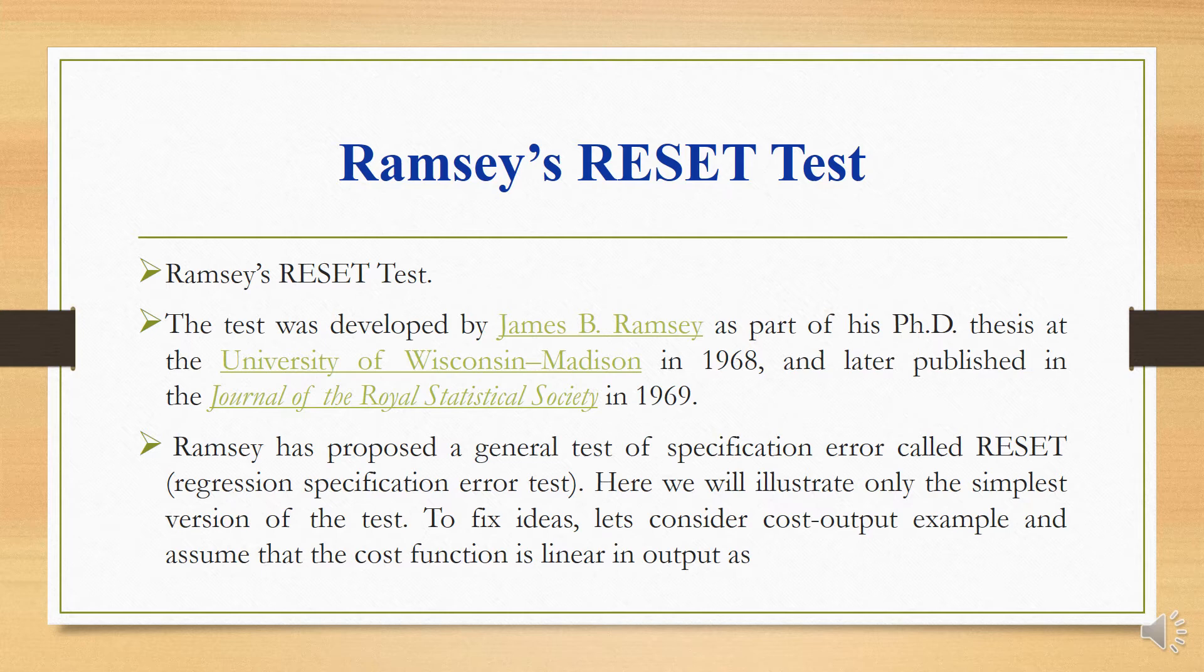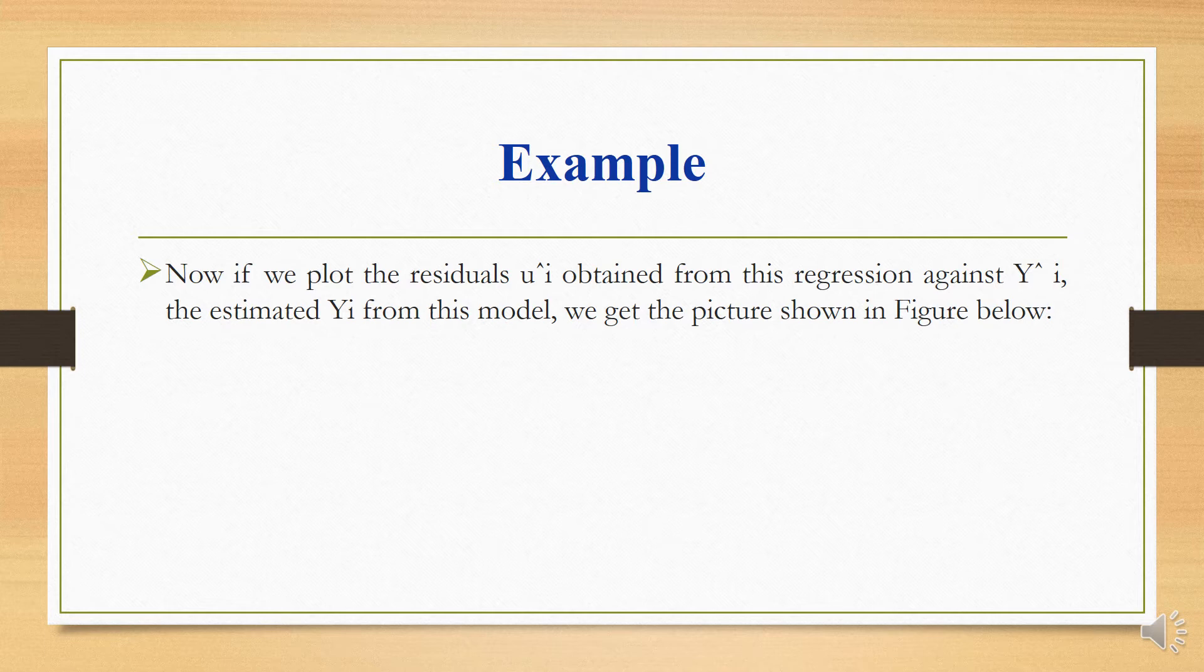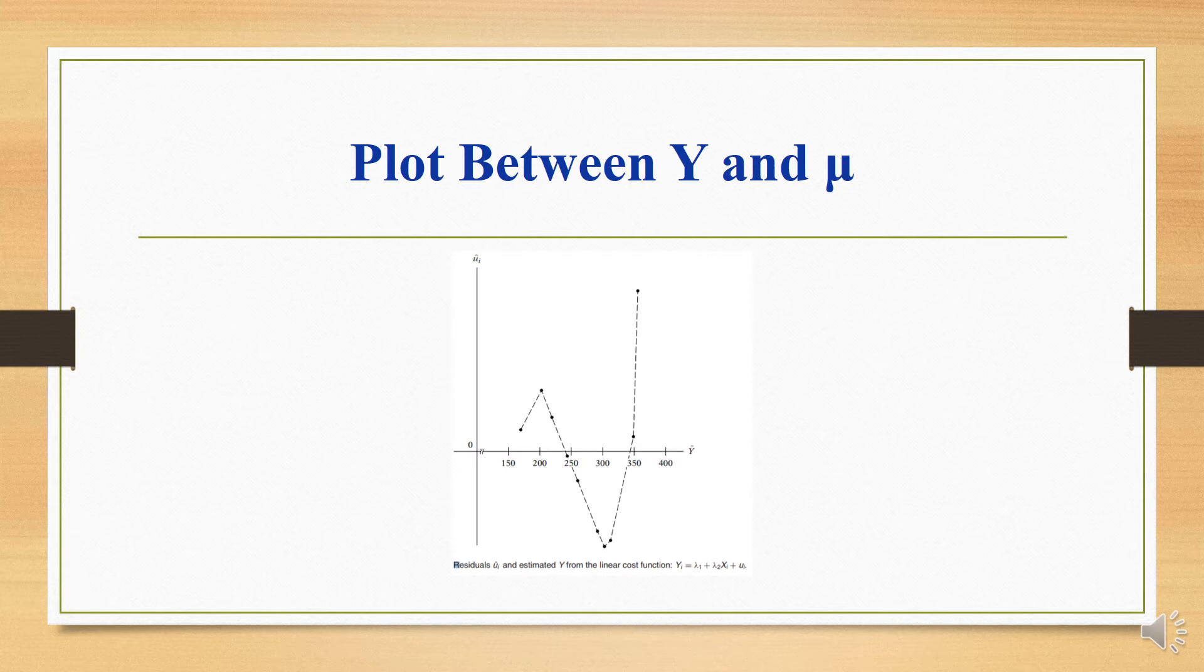To fix ideas, let's consider a cost-output example and assume that the cost function is linear in output. Consider the following model: yi equals lambda 1 plus lambda 2 xi plus mu i, where y equals total cost and x equals total output. This is model 1. Now, if we plot the residuals of the above regression model against y hat, the estimated y from this model, we get the picture shown in the figure below.